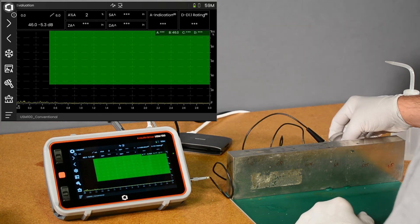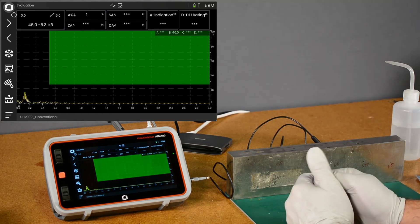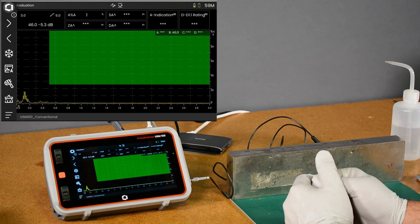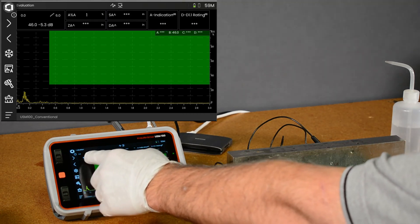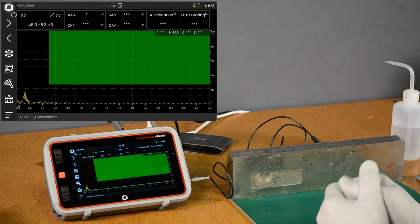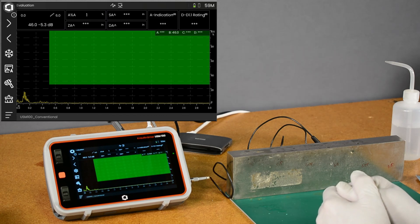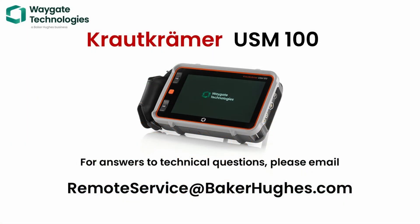That is AWS D1.1 in its simplest form. We walked through how to calibrate and evaluate, the use of scanning gain when we're rapidly moving, how to see the offset gain compared to our reference gain, and how to change the large readouts to be more appropriate to the AWS method. Thank you for joining me. As always, if you have any questions, please reach out to remoteservice@bakerhughes.com. We very much look forward to hearing from you. Thank you.